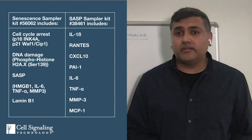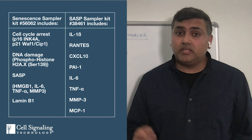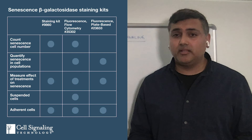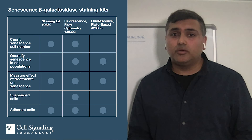For many researchers, kits are a convenient way to find a combination of markers that work for their experimental model. The Senescence Antibody Sampler Kit includes markers to assess cell cycle, DNA damage, and SASP. If you need to further explore SASP, several markers are collected in the SASP Sampler Kit. For quantitative measurement, our scientists developed two kits for measuring beta-galactosidase activity with fluorescence-based readouts—one for flow cytometry and one for plate readers—allowing quantitative measurement with statistical power in cell populations. Links are in the description below.